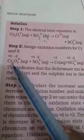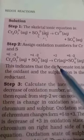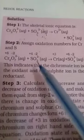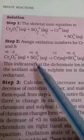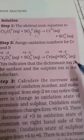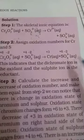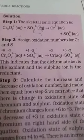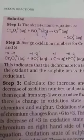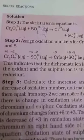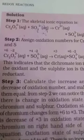So to summarize step 2: chromium goes from +6 to +3, and sulfur goes from +4 to +6. Step 2 is to write out all the oxidation numbers. Now what do we do in step 3?